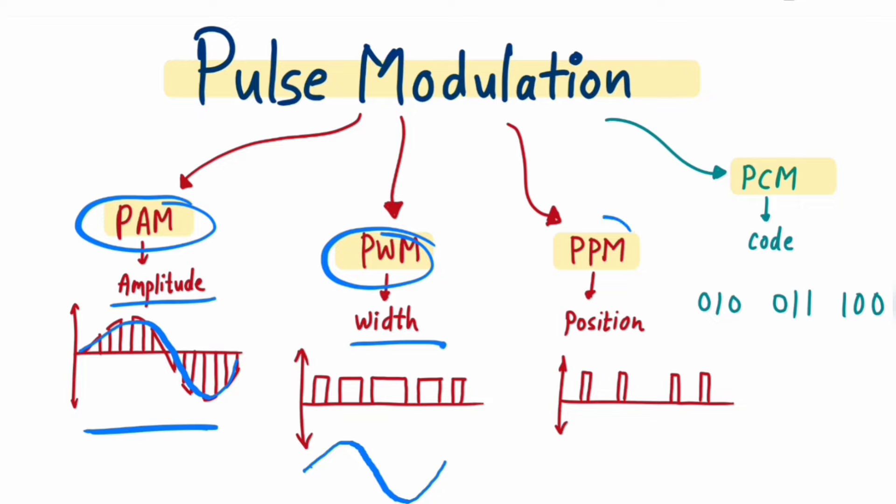The third type is PPM - Pulse Position Modulation. The amplitude is constant, width is constant, but the position will change. Just like the modulating signal amplitude changes, the carrier pulse's position will change.